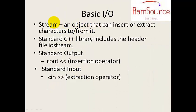Next is basic input and output. In C++, I/O is stream-based. A stream is an object where the user can insert as well as extract values. The header file that supports this is iostream — input-output stream. The standard output is cout, which is similar to printf in C language.